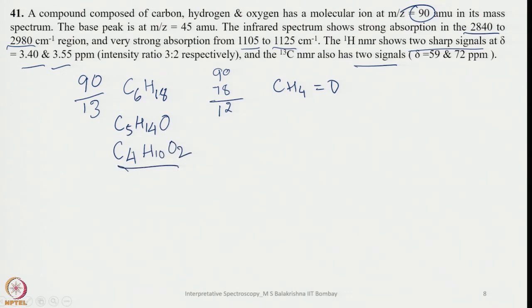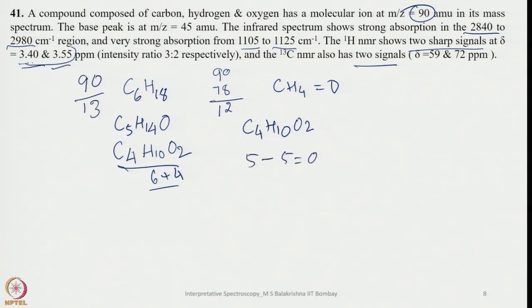With C4H10O2, looking at the two chemical shifts — 3.40 and 3.55 ppm — in a 3:2 ratio, we divide the 10 hydrogens into 6 and 4. That means we have two types of hydrogen atoms. Checking the hydrogen deficiency index: (4+1) − 5 = 0, so there is no unsaturation. The compound has 2 types of carbons.